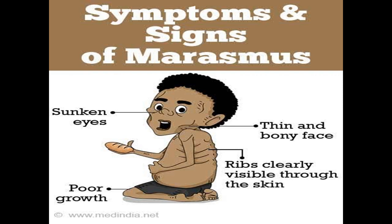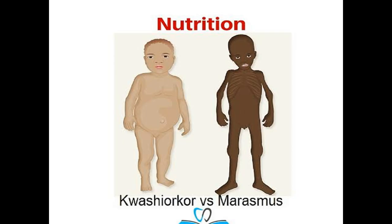Now, the symptoms of Marasmus are: sunken eyes, overgrowth, thin and bony face, and ribs clearly visible through the skin. Here I have compared these two diseases, Kwashiorkor and Marasmus, and you have seen both sets of symptoms carefully.